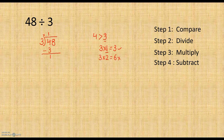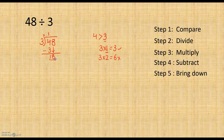Then we go to step 5. In step 5, we bring down the next digit of the dividend. The next digit is 8, so we bring it down here. Now the number becomes 18.